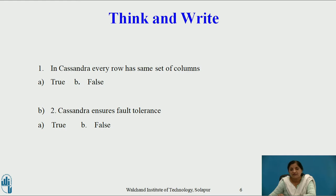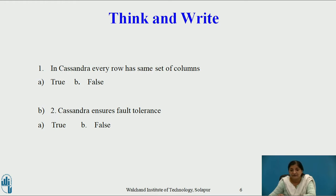Second question: Cassandra ensures fault tolerance — is it true or false? Yes, it's true. Because Cassandra has a peer-to-peer network architecture and uses replication strategy, every node is independent of every other node. They play the same role, and every node has the capability to handle read and write requests of the client irrespective of whether data is stored on it or not. So even if one node fails, the work does not stop. Data can be fetched from its replicas, or read/write requests can be sent to other nodes for processing. Hence, Cassandra ensures fault tolerance.